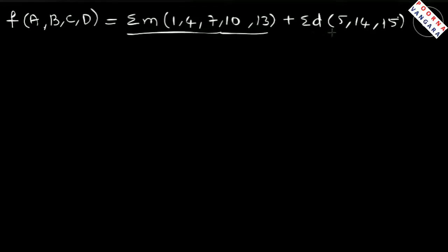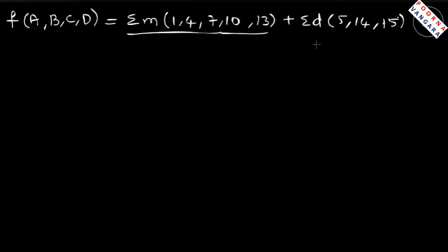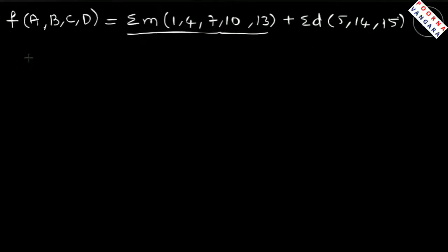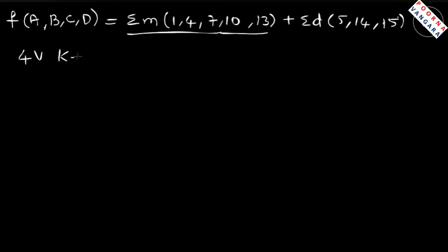For minterms 5, 14, 15 the value might be 0 or 1, so those are don't cares — if required, you can consider those minterms as true minterms and use the value 1 in the K-map. First we need to consider a four-variable K-map.